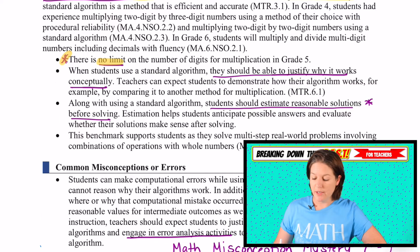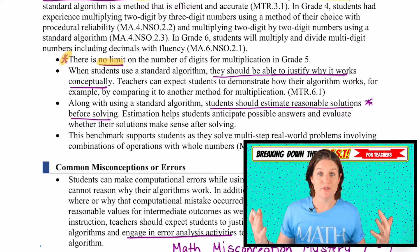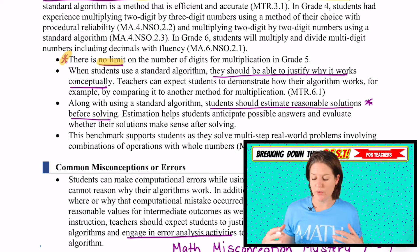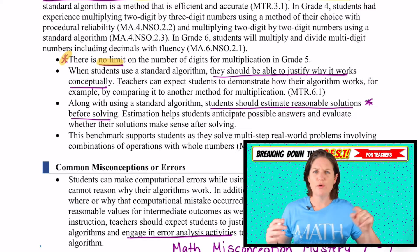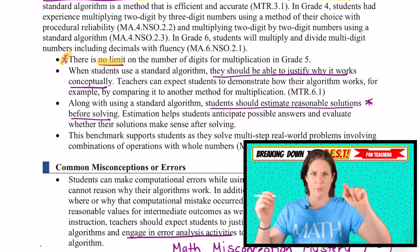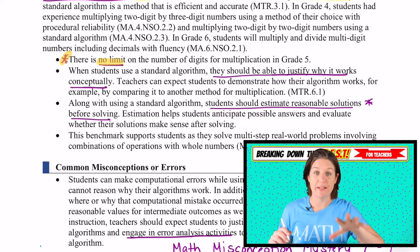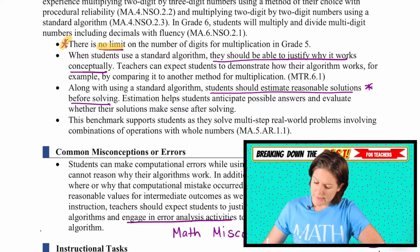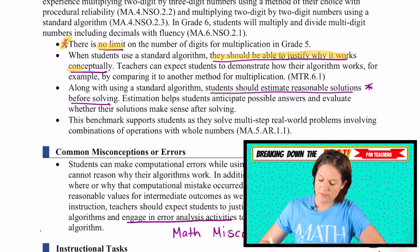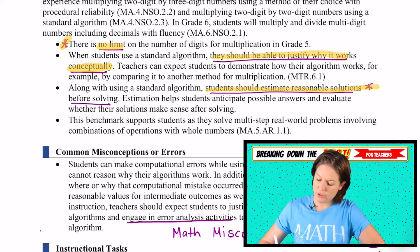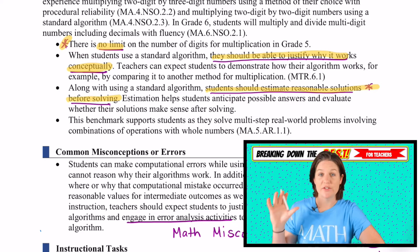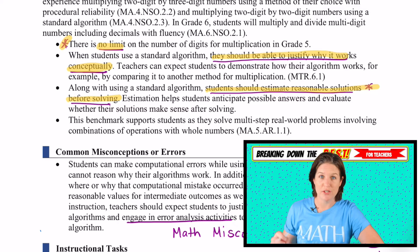Now it does say no limit here, and in Taking on the BEST it's not that I put a limit on it, but I had to stop the skill level somewhere — we'll go through that in a minute. The standard says there is no limits, and we have to assume the possibility of it continuing is out there. When a student uses the standard algorithm, they should be able to justify why it works conceptually. Students should also be able to estimate solutions before solving, and there's a lot of intentional estimation in Taking on the BEST, so I've got you covered there.